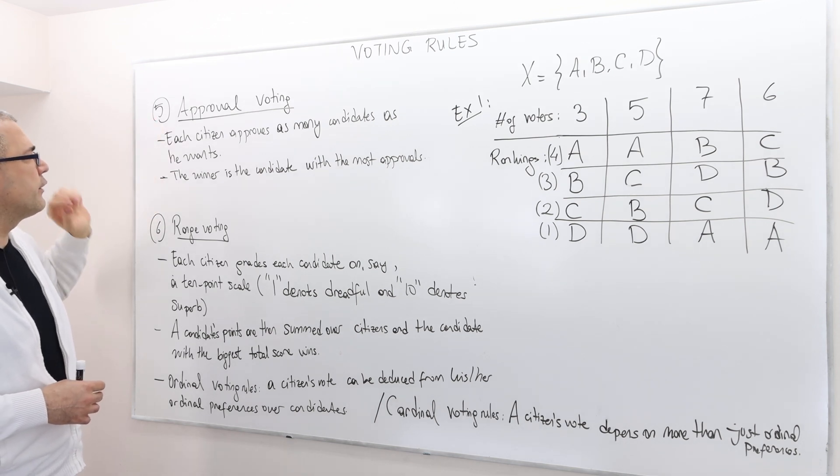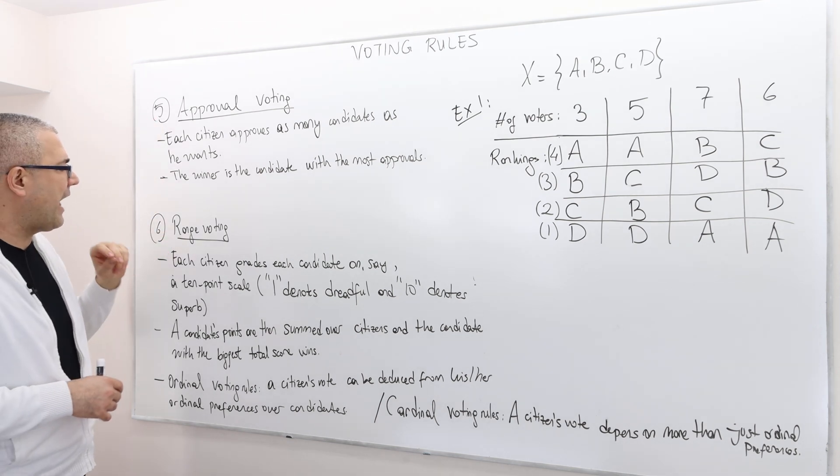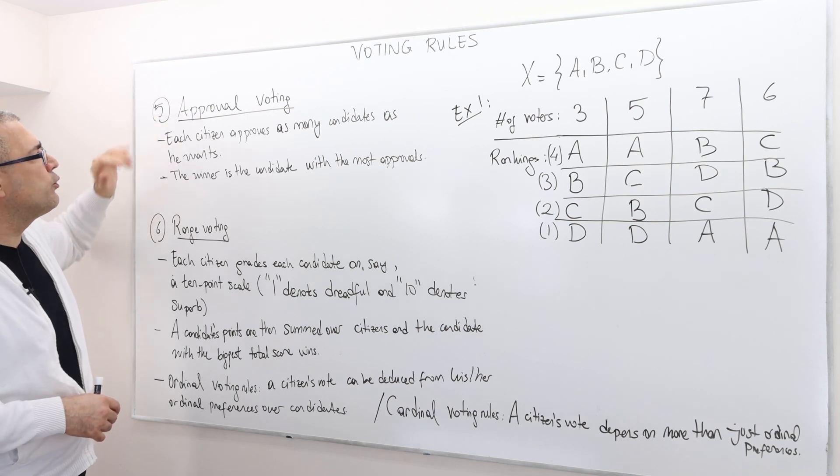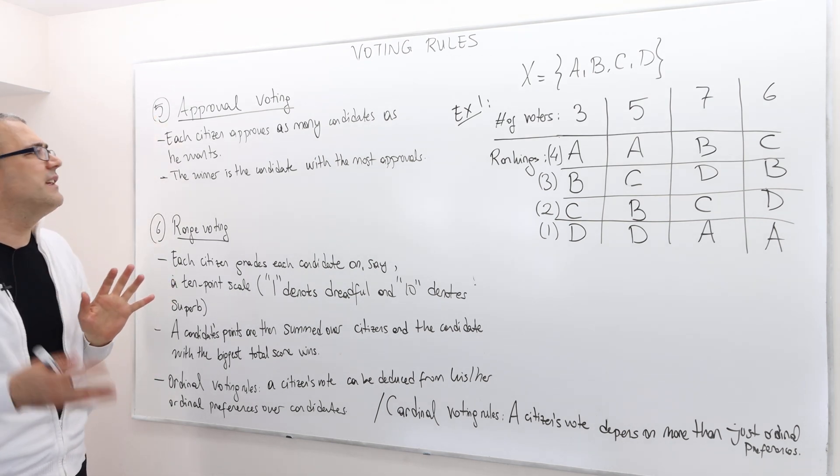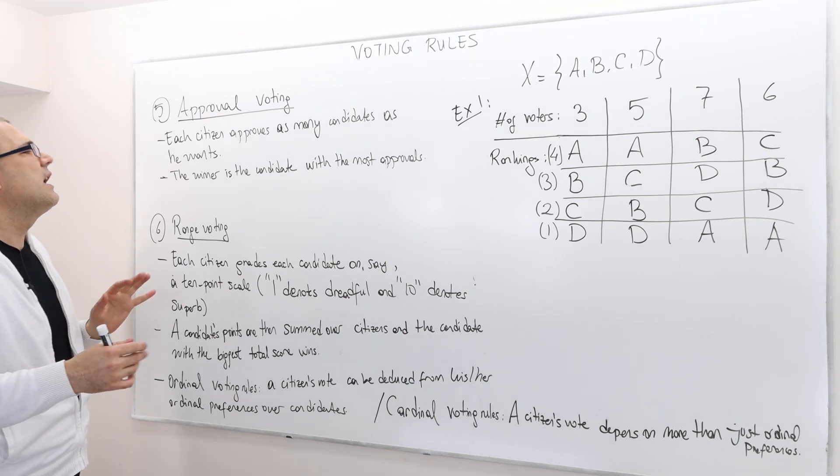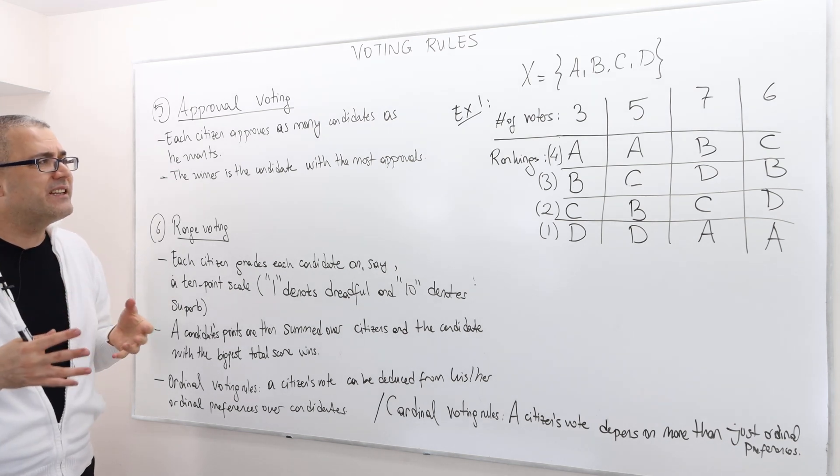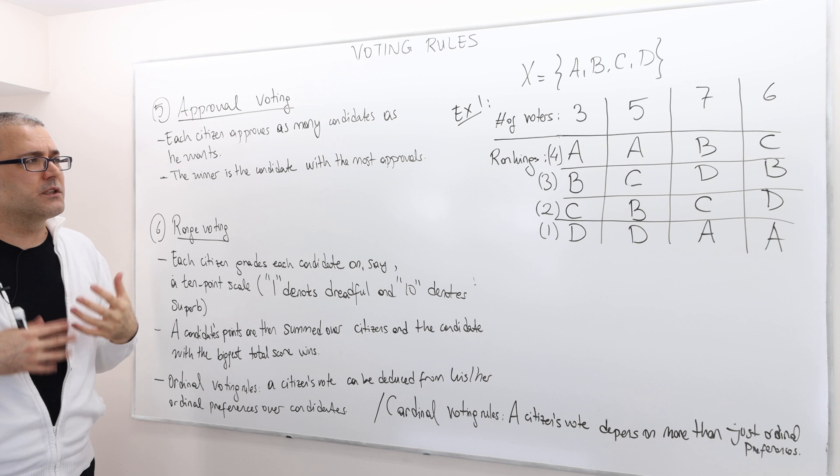Approval voting. The first one that I'm going to talk about, and range voting. The approval voting is simple. Each citizen approves as many candidates as he wants, and the winner is going to be the candidate with the most approvals.